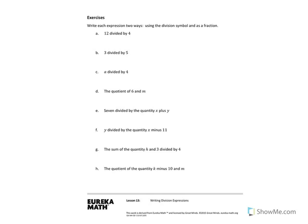Now we're going to work through the exercises. On your paper, you should be writing these down. The first one says 12 divided by 4. They want us to write it using the division symbol and as a fraction. So using the division symbol it's 12 divided by 4, and as a fraction it's also 12 over 4. You should also do 3 divided by 5, which looks like 3 over 5, and a divided by 4, which looks like a over 4.